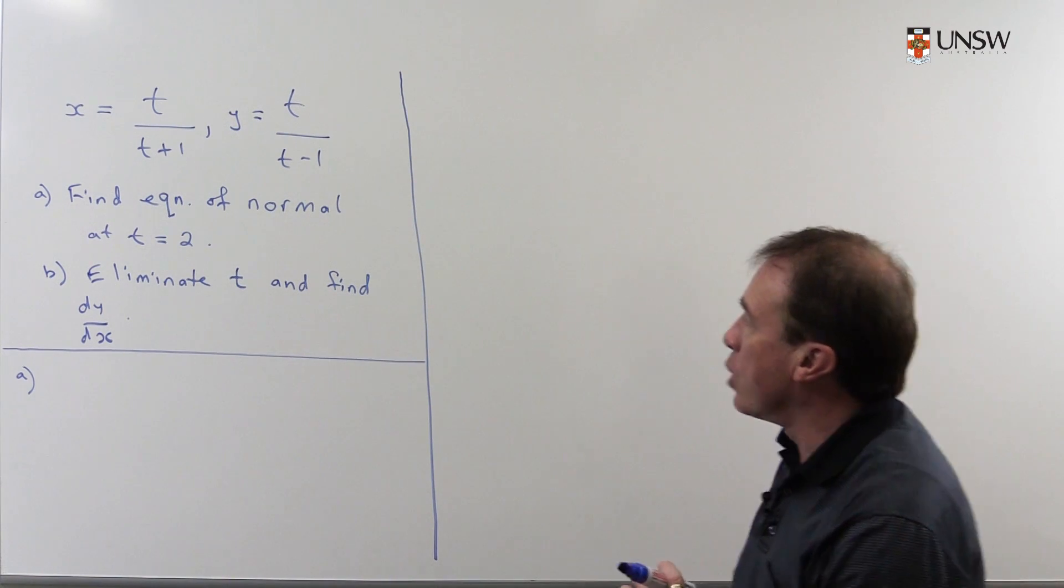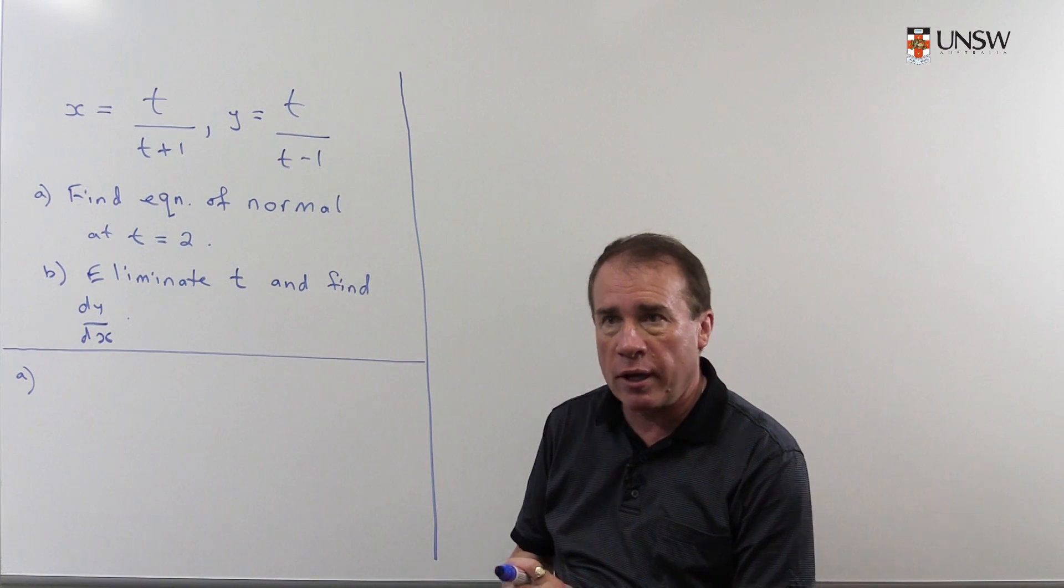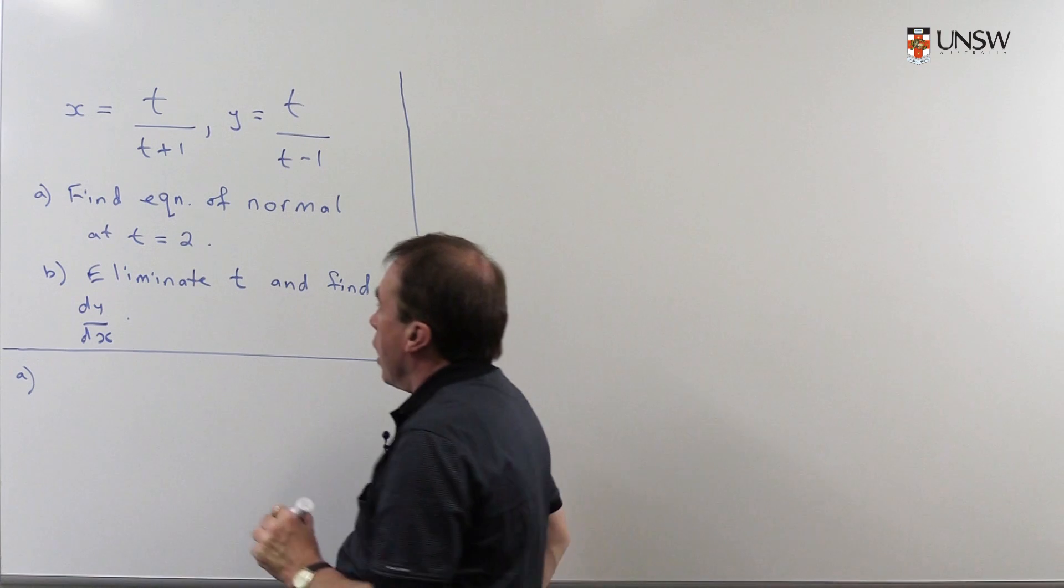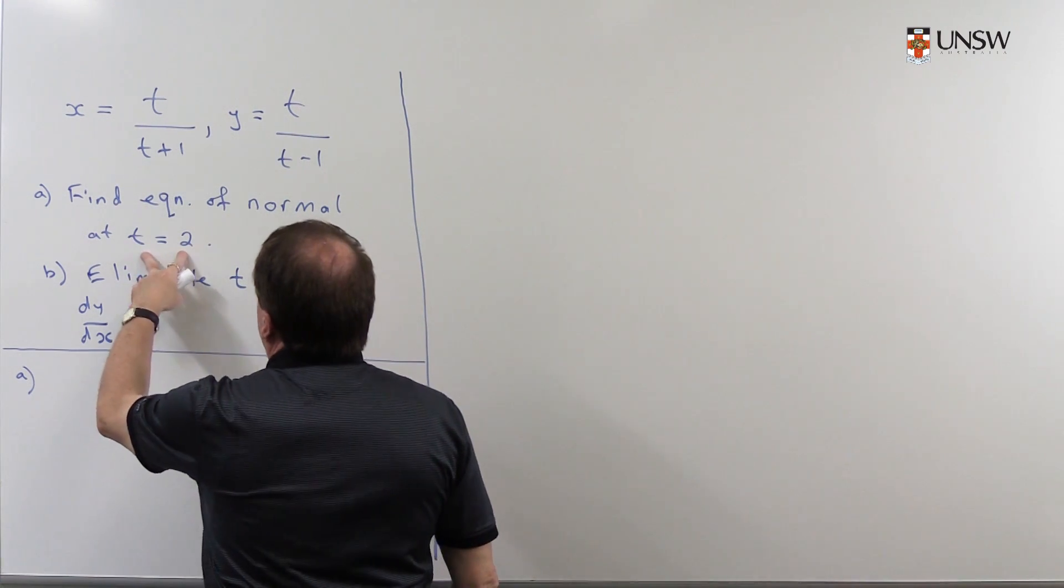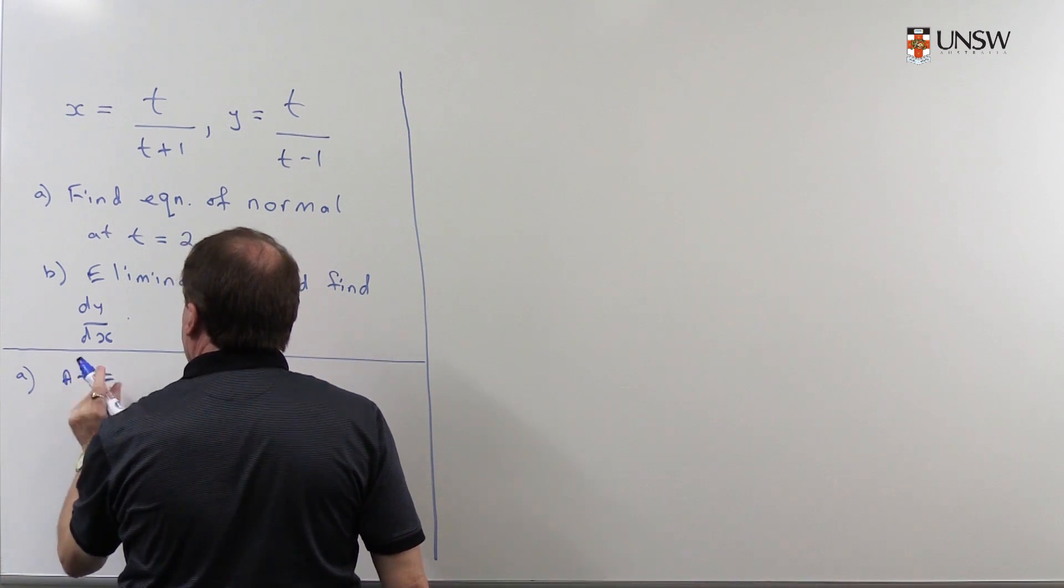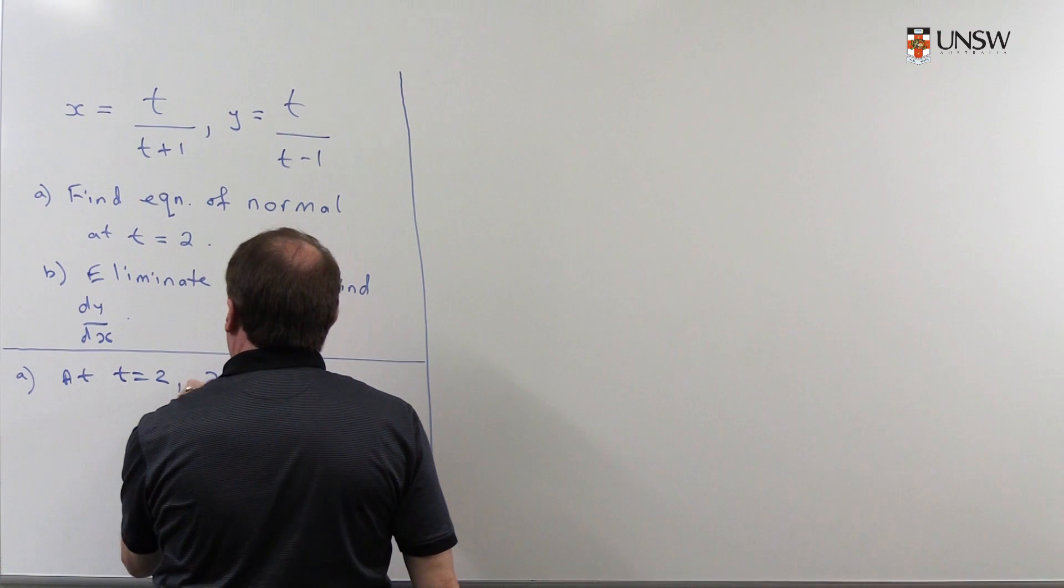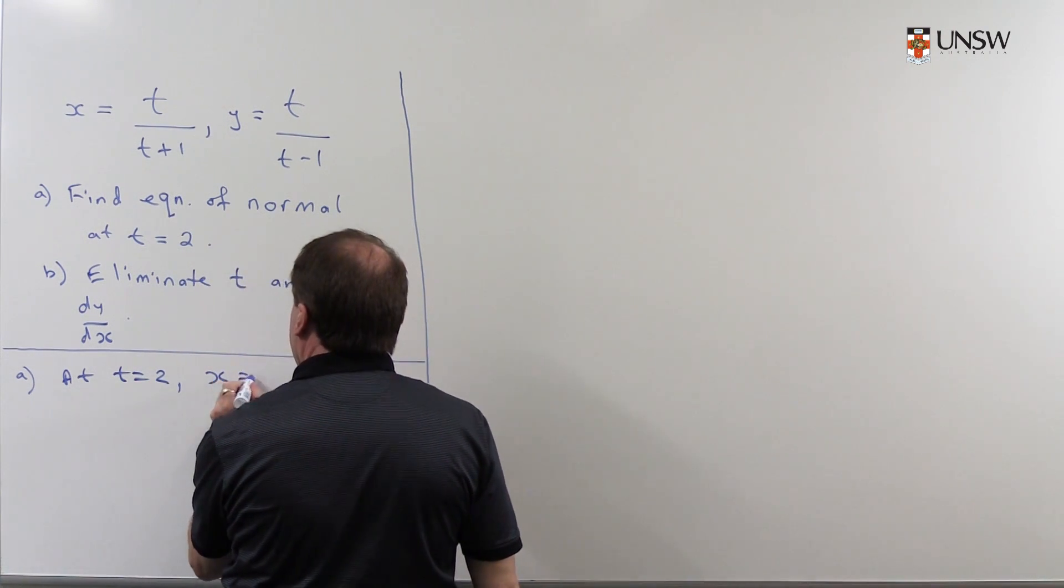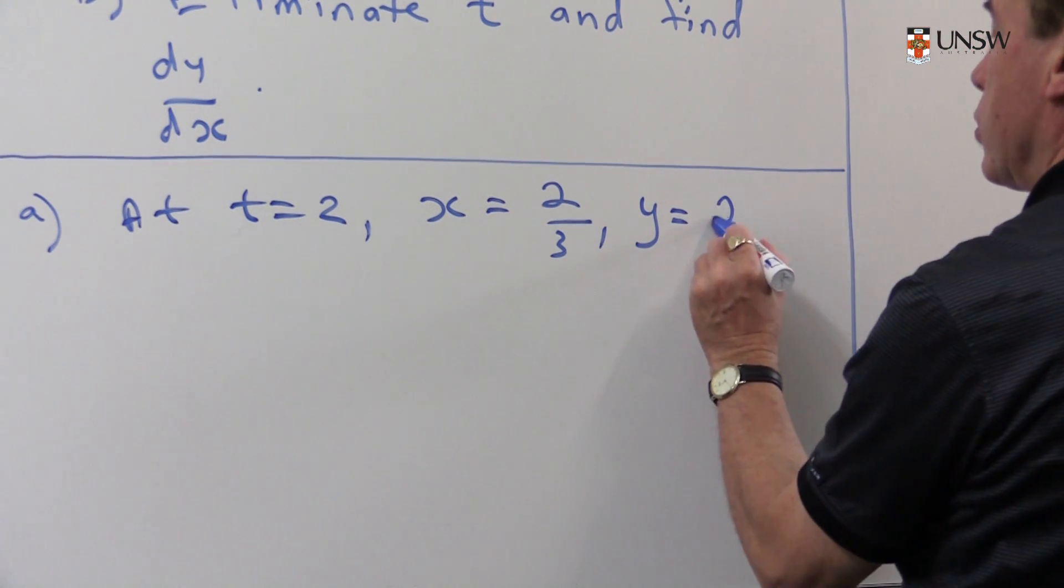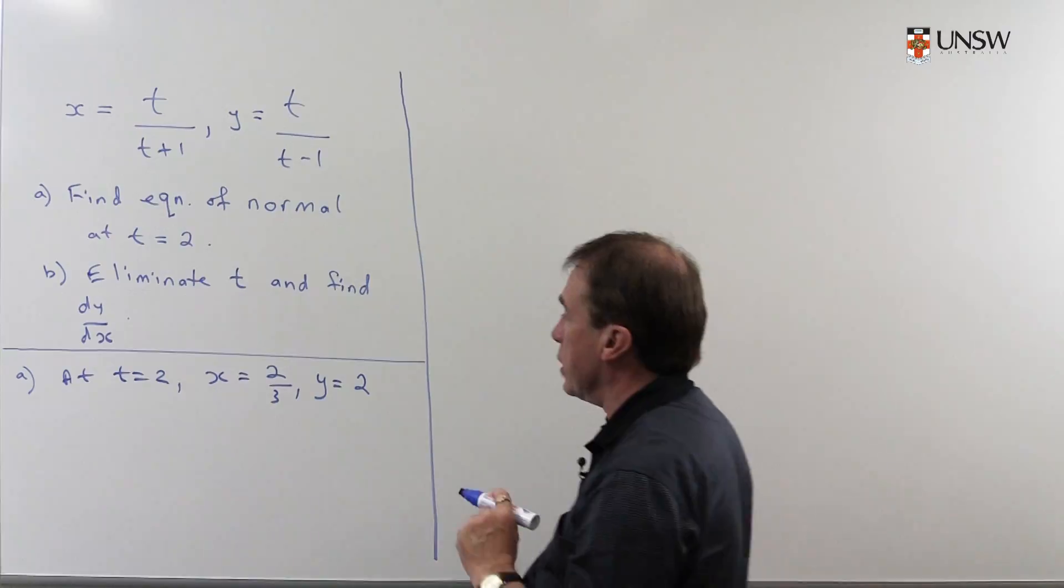So the first one, I want to get the equation of the normal. Normal is perpendicular to the tangent. I get the tangent gradient by taking the derivative. I should worry too about a point on the normal. So I might calculate that first. So at t equals 2, then I have x is equal to 2/3 and y is equal to 2. So I calculate that point at t equals 2.